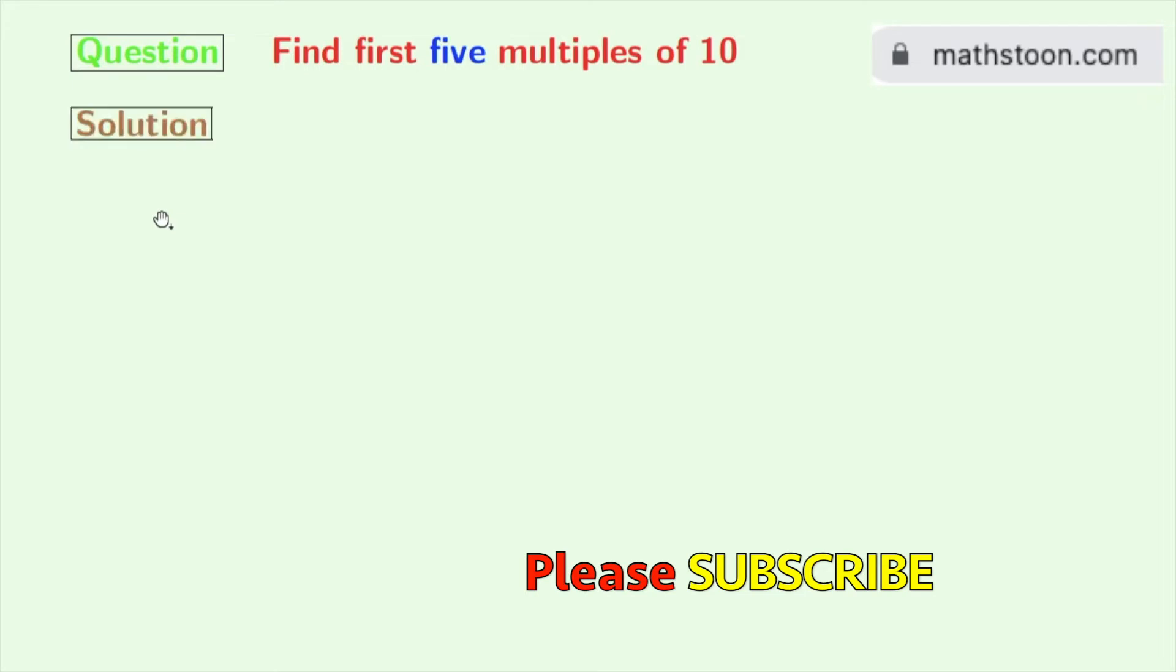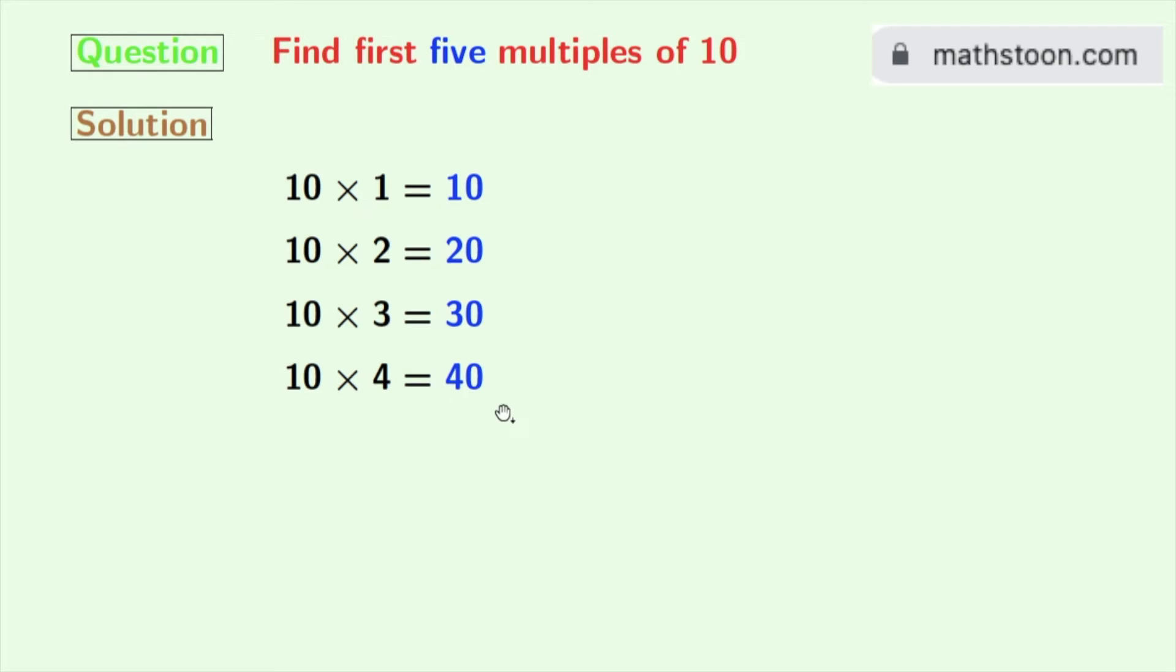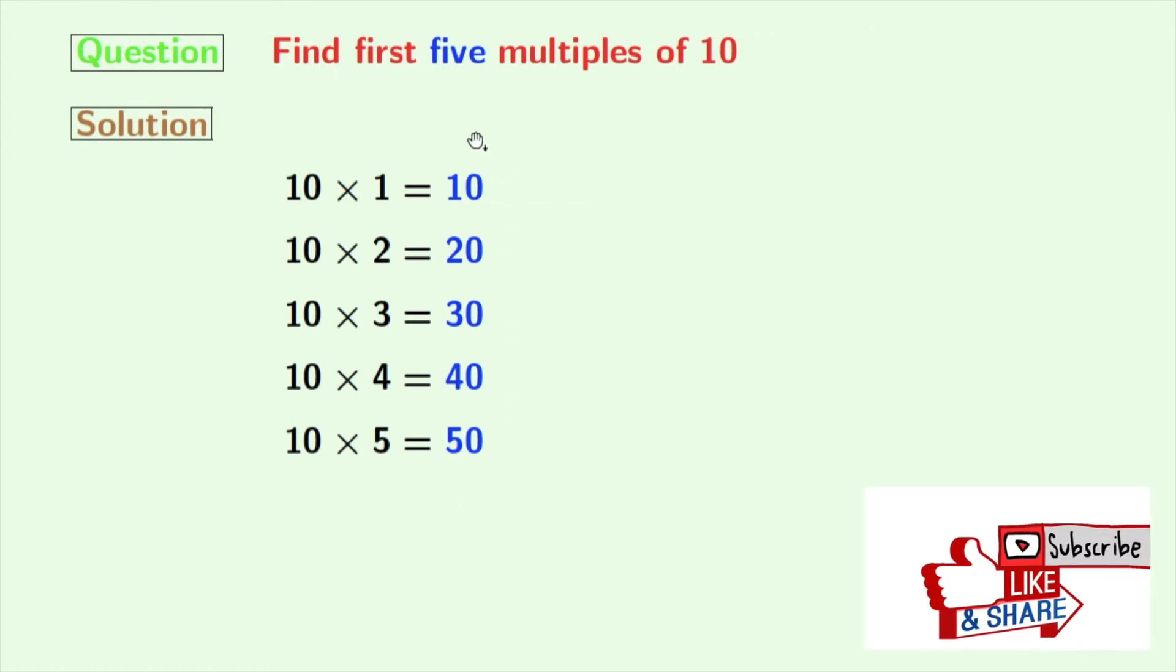Now let's start. 10 times 1 is 10, 10 times 2 is 20, 10 times 3 is 30, 10 times 4 is 40, and 10 times 5 is 50. So look, we have found the first five multiples of 10.